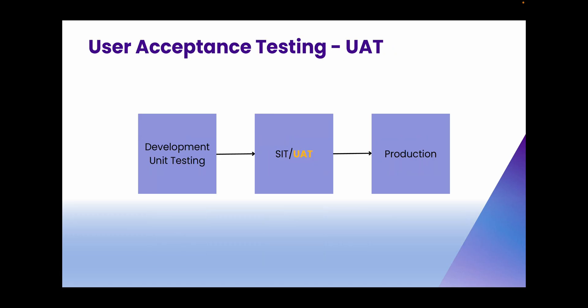The next testing phase is UAT, which is user acceptance testing. This is where the end users who are actually going to use the application will test the scenarios. It usually happens in the SIT system itself, or sometimes there is a separate UAT test system available.